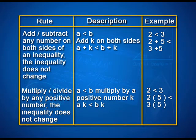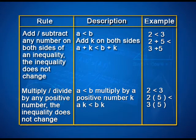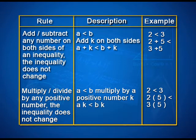Let us summarize the rules. Rule 1: If we add or subtract any number on both sides of a linear inequality, the inequality does not change. That is, if a < b, then a+k < b+k. For example, 2 < 3 implies 2+5 < 3+5.